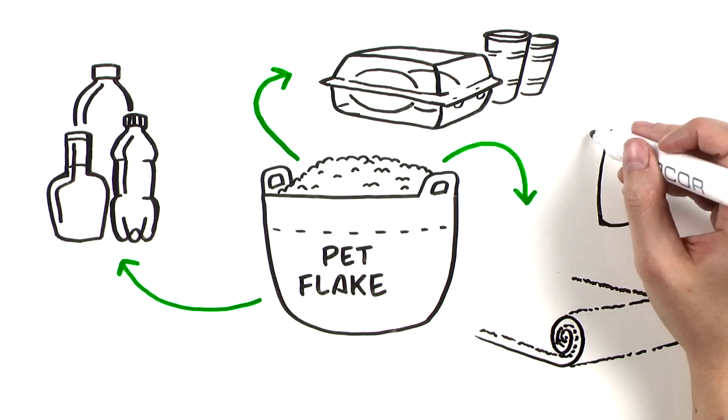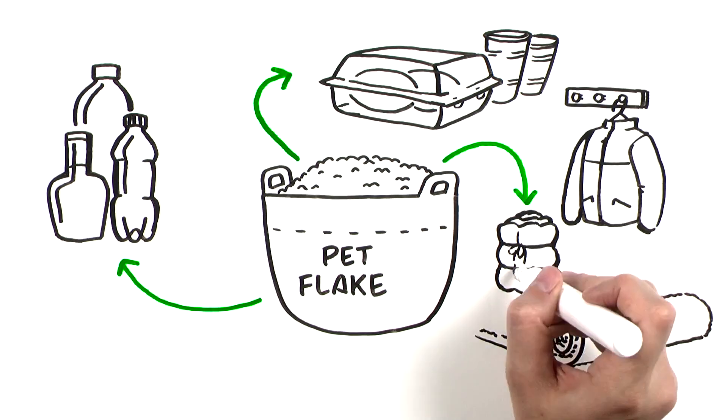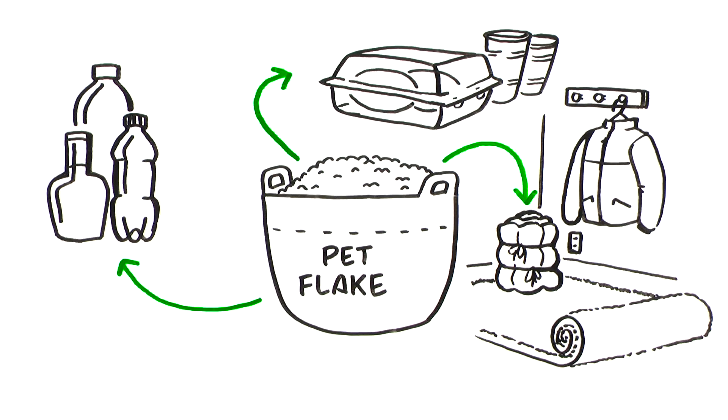Recycled PET is also spun into fiber for use in carpet, clothing, fiber fill, car interiors, or other materials. Pallet strapping is another common use.